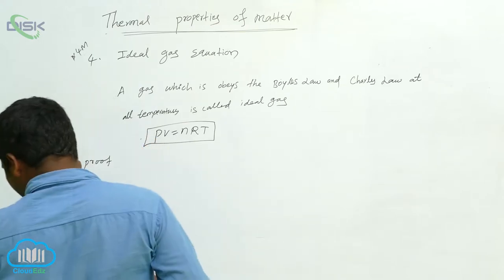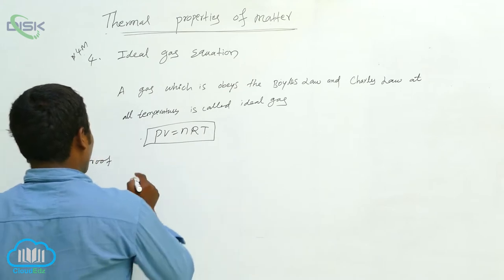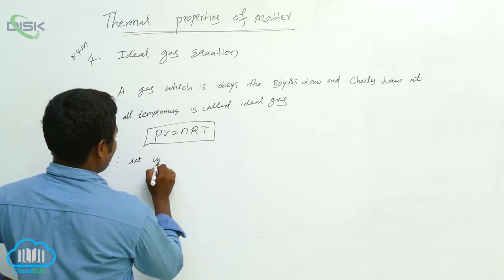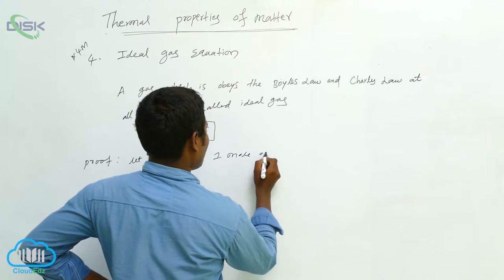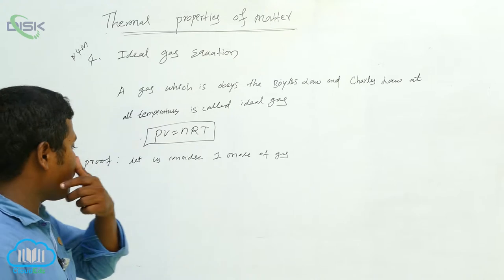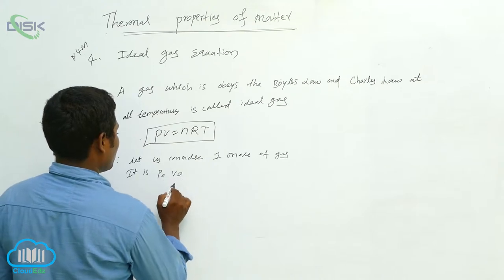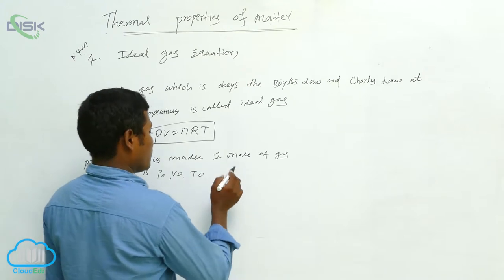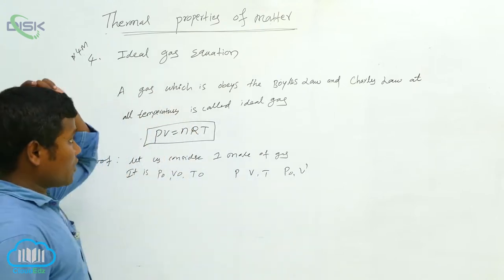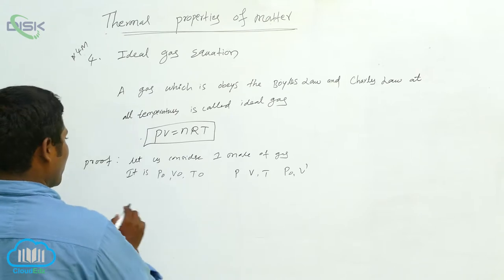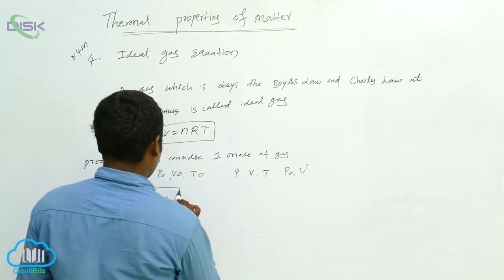Let us consider one mole of gas. It is at pressure P0, volume V0, and temperature T0. After some time, the state changes to P, V, and T. If we observe Boyle's law and Charles' law applying, then P0 V0 divided by T0 gives us one relation.